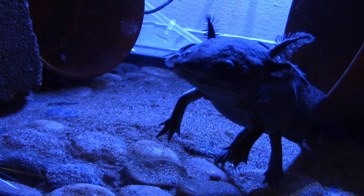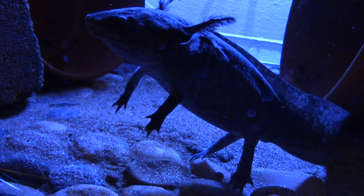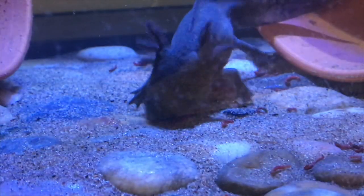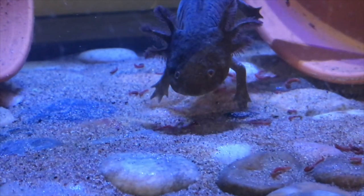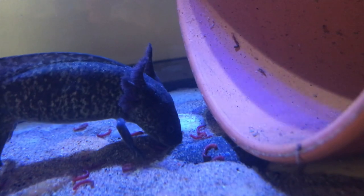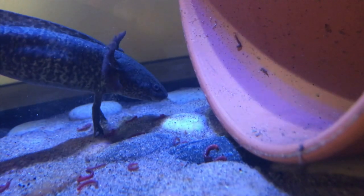There have been many documented cases of axolotls having impaction on different kinds of substrates. The reason that they get impaction from their substrate is because when an axolotl eats, they just open their mouth and very quickly vacuum suck whatever's in front of them. So if you have a loose substrate in your axolotl tank, they won't just get their food in their mouth, they'll get their substrate in their mouth as well. And anything that goes inside their mouth is getting swallowed.